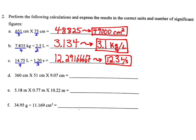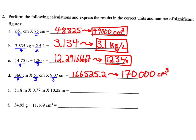Next, we have 360 centimeters times 51 centimeters times 9.07 centimeters. 360 has two significant figures because the zero at the end is not significant. 51 has two significant figures, and 9.07 has three significant figures. When we do the math, we get 166,525.2 — way too many significant digits — so we have to round to two because two of our three given values only have two significant figures. That gives us 170,000. Our units are centimeters times centimeters times centimeters, which is centimeters cubed. Our final answer is 170,000 centimeters cubed.